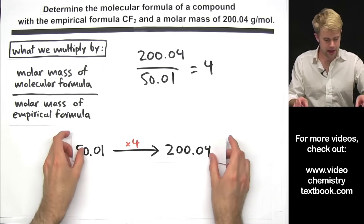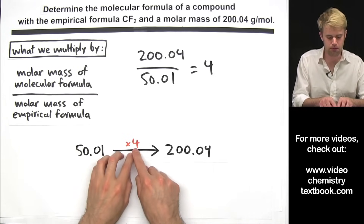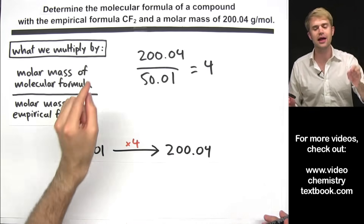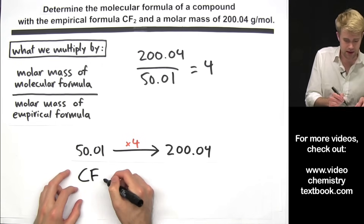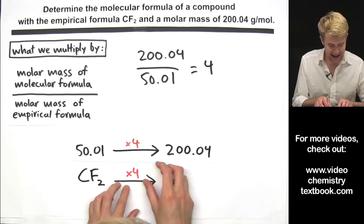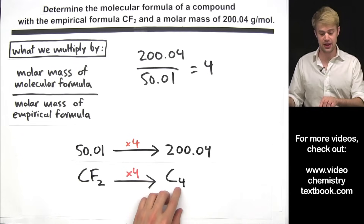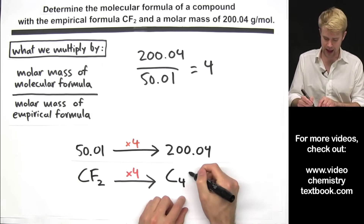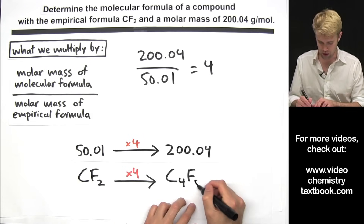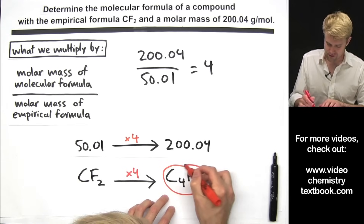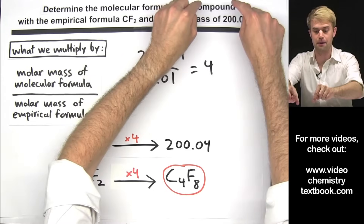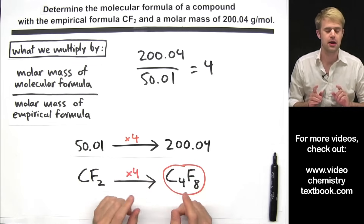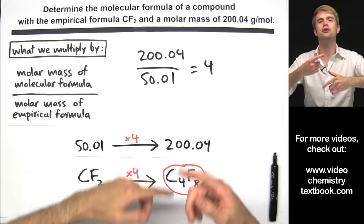The 4 means that we take the molar mass of the empirical formula and multiply it by 4 to get the molar mass of the compound. We do the same thing to get the molecular formula: start with the empirical formula CF2 and multiply it by 4. C has an implied subscript of 1, so 1 times 4 is 4; F2 times 4 gives F8. C4F8 is the molecular formula. Let's do a couple more examples using just this method.